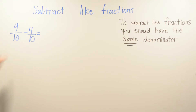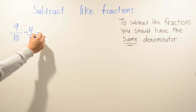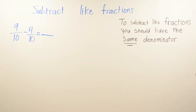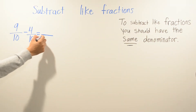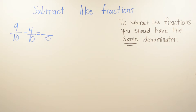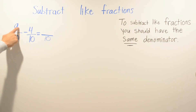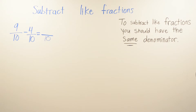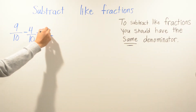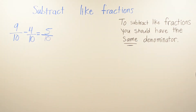Remember, we don't move or change the denominator, so it's still going to stay as 10. The only thing that changes is your numerator. So we subtract: 9 minus 4 is 5. Since 5 and 10 share a common factor, we can still simplify, so go ahead and simplify.